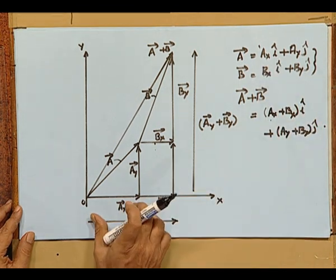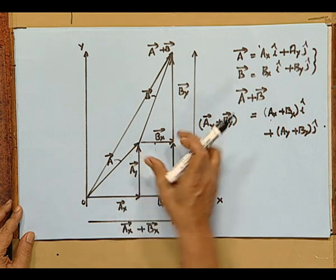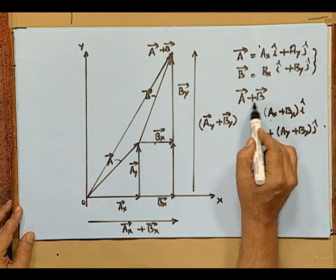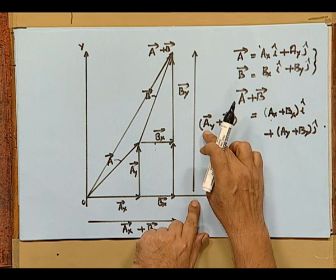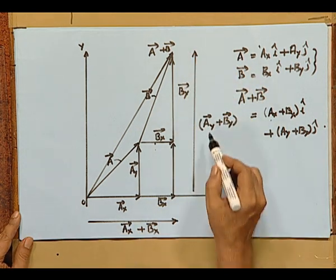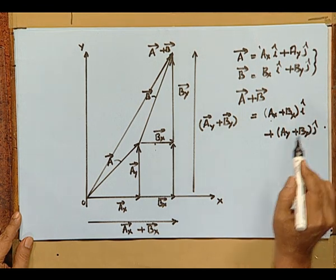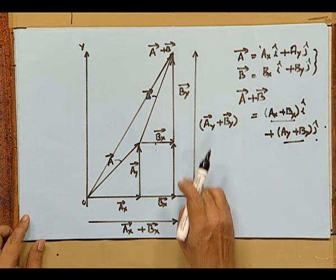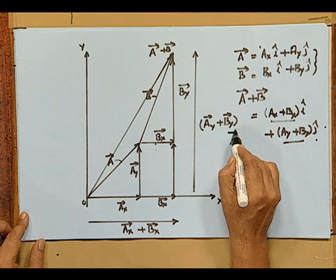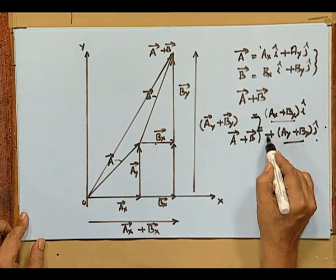So in this diagram, along the x-axis you have ax plus bx, and in the y-direction you have ay plus by — and that is the same as the resultant vector. Vector a can be written as ax i plus ay j. Similarly, b has been resolved into bx i plus by j. So the vector a plus b, from the diagram, has x-component ax plus bx and y-component ay plus by. Therefore, vector a plus b is written as (ax plus bx) i plus (ay plus by) j.